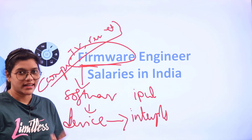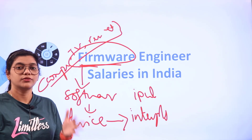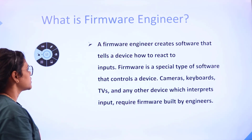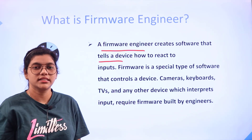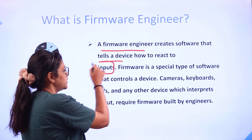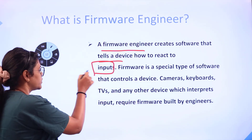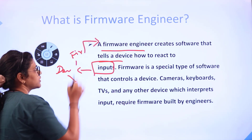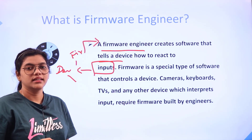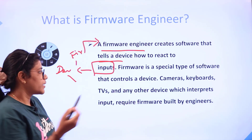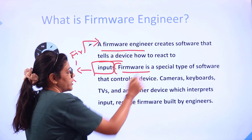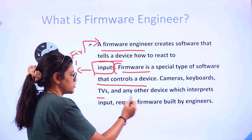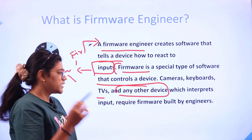Now that you understand what firmware is, we are going to understand what a firmware engineer does. This person is defined by creating software that tells a device or interprets a device to react to the inputs. Whatever input goes into a particular device is interpreted by the firmware, and all of that is under the control of a firmware engineer — from design all the way to implementation. Firmware is a special type of software that controls devices such as cameras, keyboards, TVs, remotes, etc., interpreting their input.